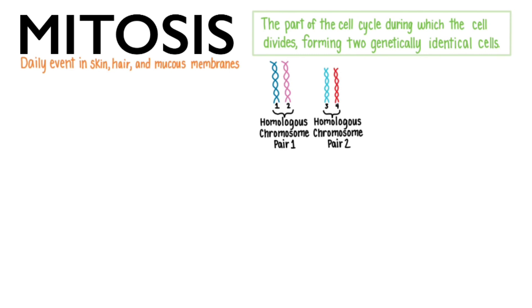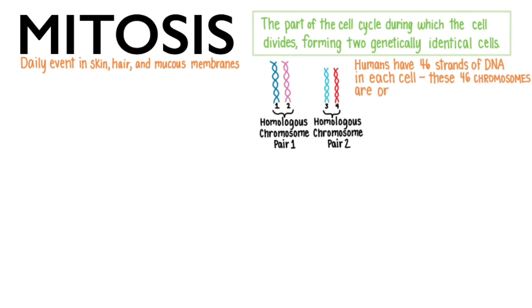You can, in an extremely simplified concept, think of homologous pairs as having a backup copy in case of mutations, as well as providing great variety for our appearance, metabolism, and health. Humans have 46 strands of DNA in each cell. These 46 chromosomes are organized in 23 homologous pairs. That would take too much time and space to draw.